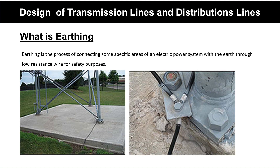This is the tower structure. You can see this is the tower and this is the earthing — the wire connected to the earth GI rod. These are the connections of the earthing, and the connections should be very tight.